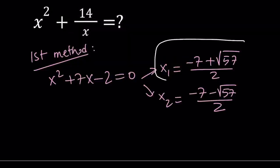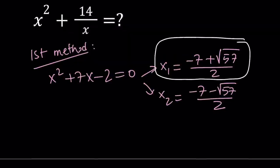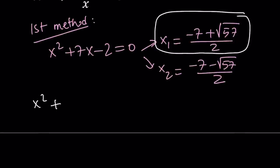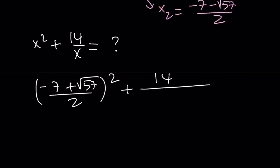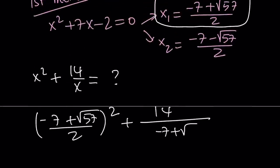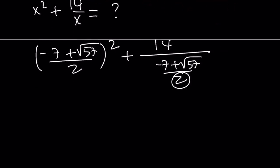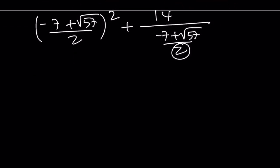Let's go ahead and use x sub 1 and plug it into our expression that we're trying to evaluate. We're supposed to evaluate x squared plus 14 over x. We're going to replace x with x1. Let's go ahead and square negative 7 plus square root of 57 over 2. If you square that, then we're going to add 14 divided by the x value, which is negative 7 plus square root of 57 over 2.